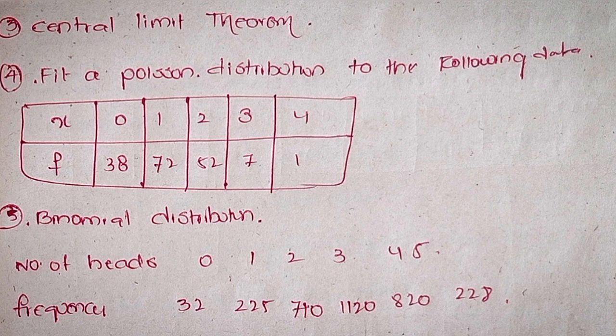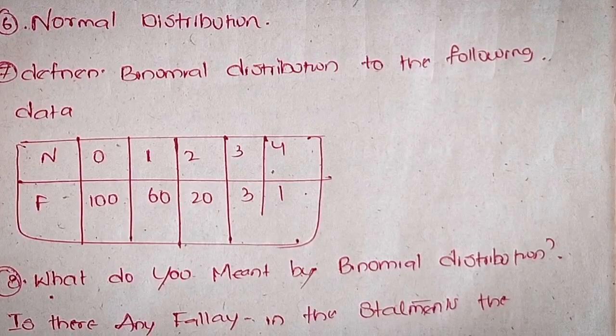Fifth, binomial distribution — Number of heads: 0, 1, 2, 3, 4, 5. Frequency: 32, 2, 2, 5, 7, 50, 11, 20, 8, 20, 2, 8. Sixth, normal distribution. Seventh, define and fit a binomial distribution to the following data. N values: 0, 1, 2, 3, 4. F values: 160, 23, 1.